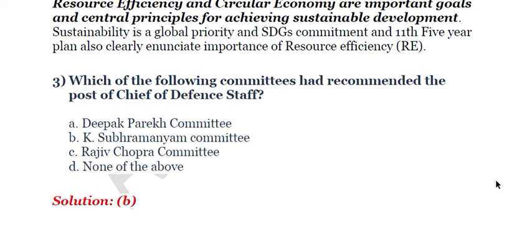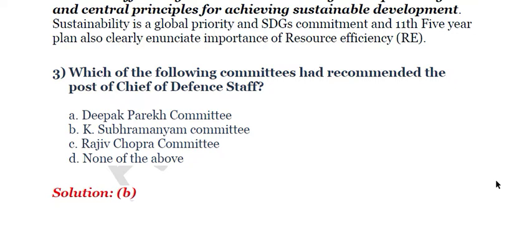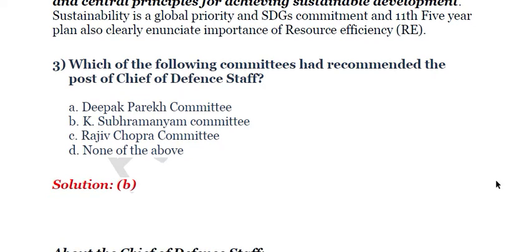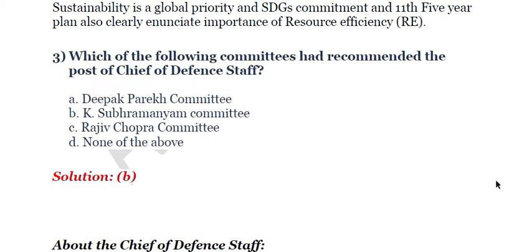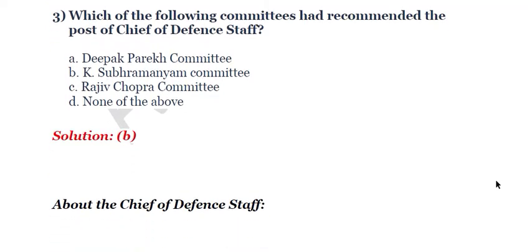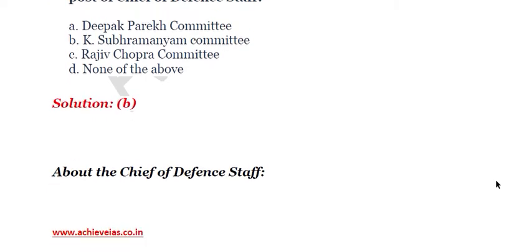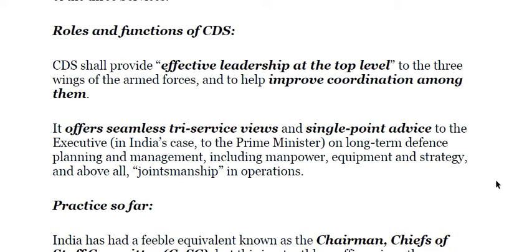The third question is: which of the following committees recommended the post of Chief of Defence Staff? Options are: A) Deepak Parede Committee, B) K. Subramaniam Committee, C) Rajiv Chopra Committee, D) None of the above. The answer is B — the K. Subramaniam Committee. It was constituted post the Kargil War to review India's response and identify limitations. The committee highlighted a lack of coordination among the three services at the beginning of the war.